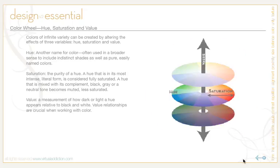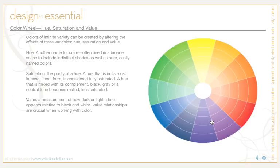Value is a measure of how dark or light a hue appears relative to black or white. A good way to judge relative value is to deeply squint your eyes when comparing colors. Notice how the yellow hue becomes much lighter than blue or violet hues. If you look from the corner of your eye, yellow will catch your attention before the others. Value relationships are crucial when working with color — there's a saying among painters: if the value is wrong, then the color can't be right.